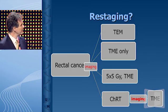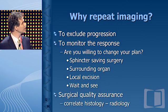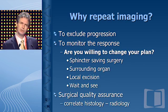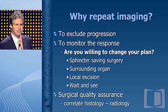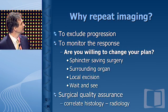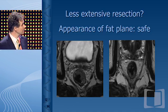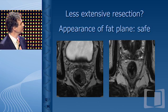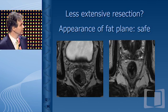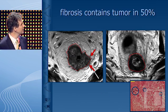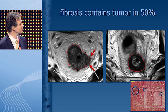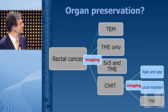Now, restaging after chemoradiation. Why would you do that? The most important reason is that you should be willing to change your plan according to the response — otherwise it makes little sense. You could think about doing a smaller operation for a big tumor. Not very often, but sometimes you see a fat plane reappear: a tumor growing into the seminal vesicles may show a free plane after treatment, so you don't necessarily have to take them out. But usually you see a big lump of fibrosis, and in half of these patients there are still tumor cells in there, so you would still have to take out the next plane.